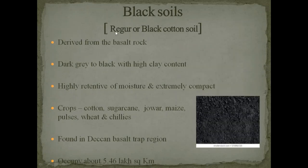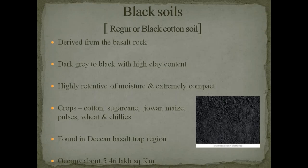Next, black soil. Black soil is also called regar soil or black cotton soil. This soil is suitable for the cotton crop, that's why it is called black cotton soil. It is derived from basalt rock, that's why it is black in colour — dark grey to black with high clay content. Because of the clay content, it is highly retentive of moisture and extremely compact, which retains moisture — that's why dry farming is possible here. Dry farming is suitable for black soil because it has fine clay particles that help retain water and moisture.